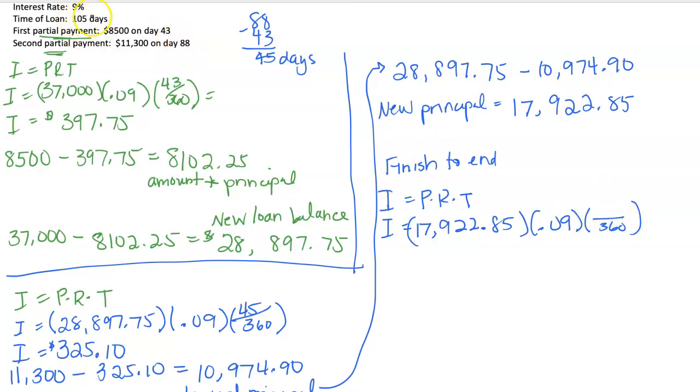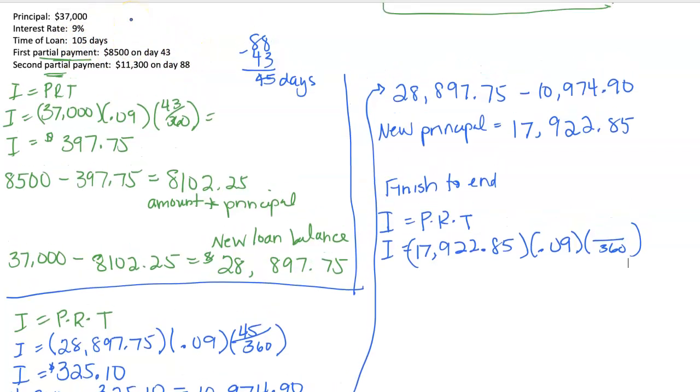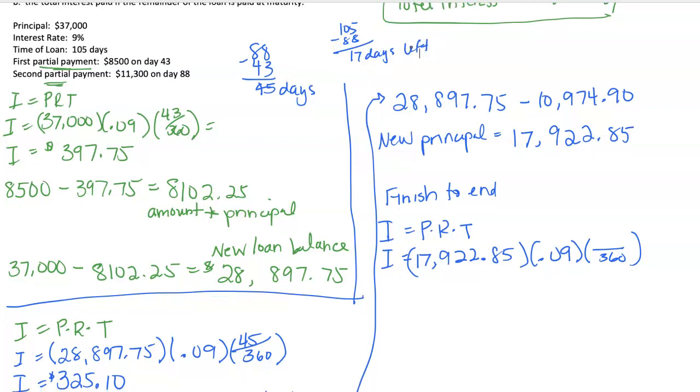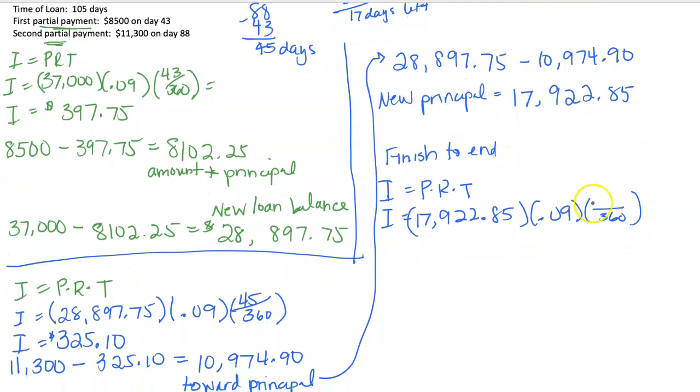And there's 105 total. So 105 days total minus 88 days and I end up with 17 days left. So here we have 17 days in this last section. And that gives me an interest of $76.17 on that last section of time.